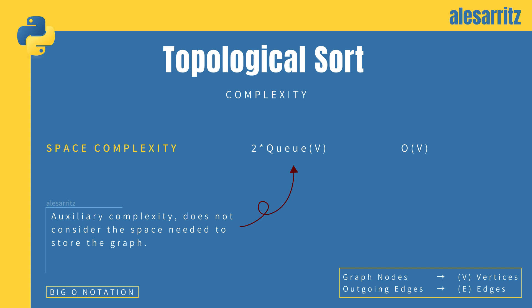Let's see. Besides the space needed to store the graph, we will use an auxiliary space O of V, with V representing the number of vertices, and this is the space needed for the two queues.